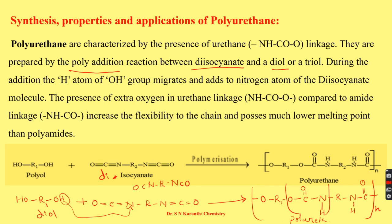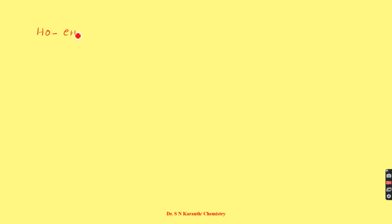This urethane linkage gives high flexibility to the chain and the polymer possesses much lower melting points. As an example of polyurethane synthesis, we can take the formation of Perlon. To synthesize Perlon, we take an alcohol containing four alkyl groups — 1,4-butanediol.